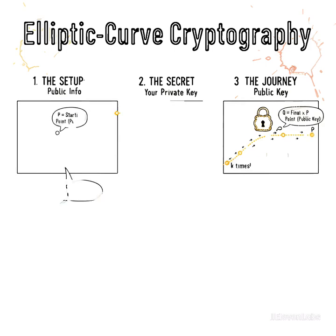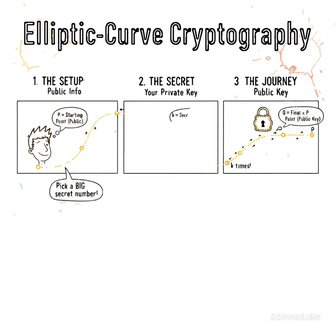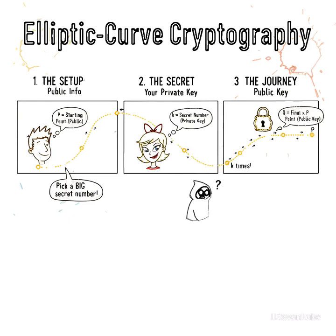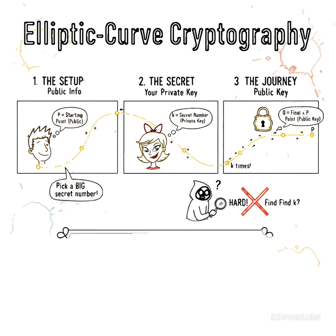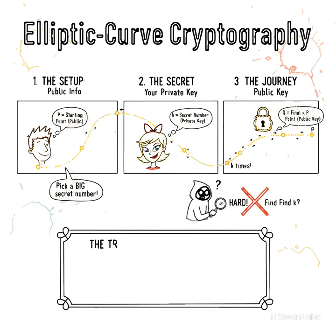The core operation is scalar multiplication, which acts as our one-way function. Everyone agrees on a public starting point P on the curve. You choose a secret number K — this is your private key. You calculate your public key Q by repeatedly adding P to itself K times: Q equals K times P. This is easy for a computer. The security comes from the elliptic curve discrete logarithm problem, ECDLP.